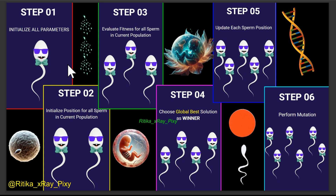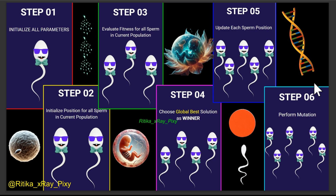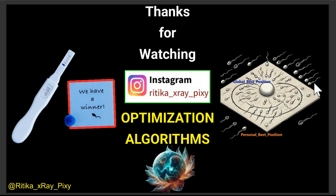To summarize, this is a simple and straightforward optimizer. First, initialize all important parameters. Then initialize the position for all search agents. Evaluate their fitness scores, compare fitness values, and choose the global best. Calculate velocity and update position for all, then perform mutation. Repeat this loop until the stopping condition is met, then display the best solution found. That's all about this video — if you have questions, comment below. Thanks for watching!